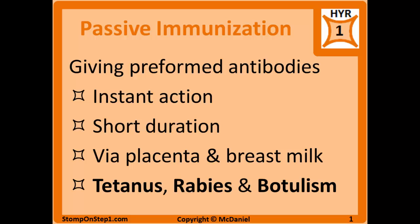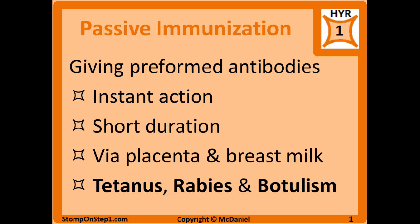Purified antibodies made from horses are also treatment options for tetanus, botulism, and rabies. You expose a horse to whatever pathogen you're trying to treat for, take that out of their blood and purify it, then give it to humans as a treatment. In most cases, this treatment is used after a person is already exposed to the pathogen — it's a last-minute option. Once someone is already starting to show signs of one of these diseases, you give them passive immunization because it works really quickly.